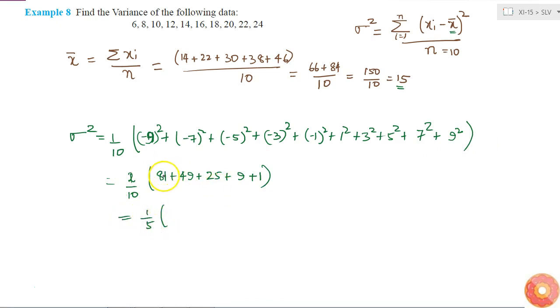Of 81 plus 49 will be 130, 130 plus 25 will be 155, 155 plus 10 is 165, 165 divided by 5. So this will be equal to 33. Therefore, my variance is 33.